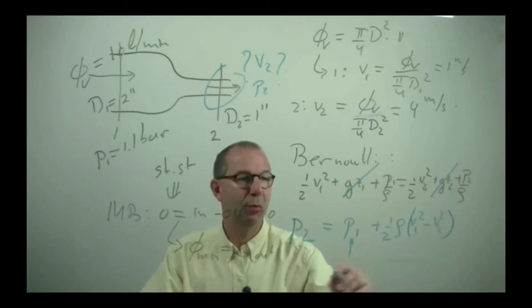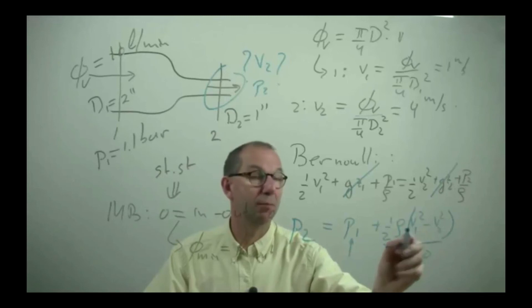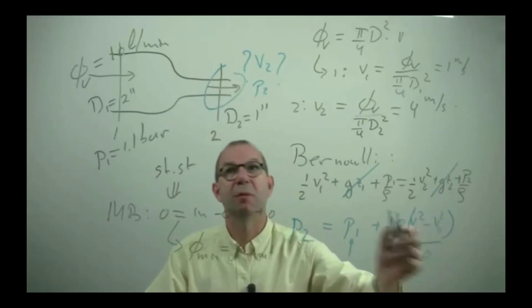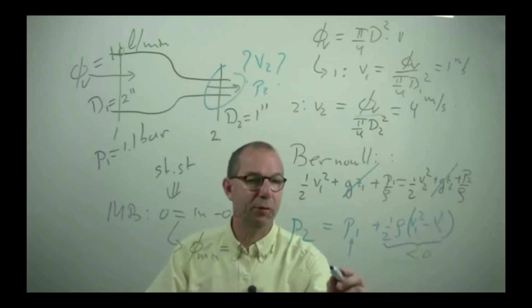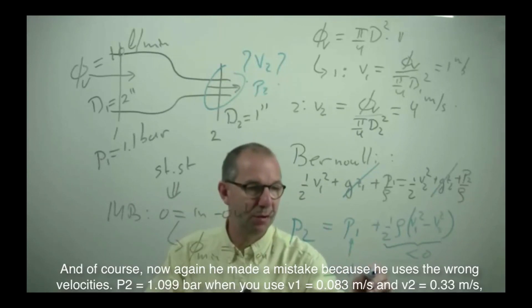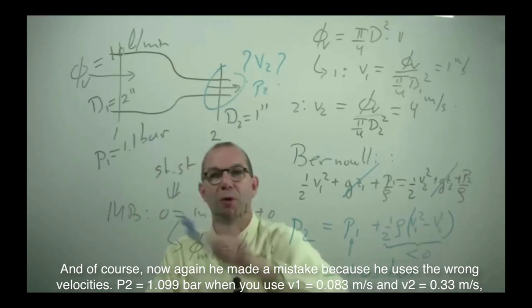This is known, 1.1 bar, these I have computed and realize this is smaller than 0 as V1, the upstream through the bigger part of the tube, is smaller than downstream through the narrowed tube, this is negative, hence P2 is smaller than P1 and if you put in the numbers you're going to get a drop towards 1.03 bar from the 1.1 bar.